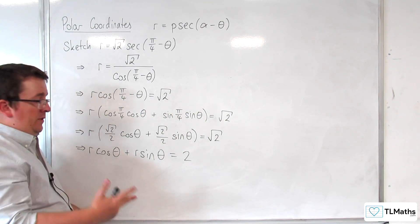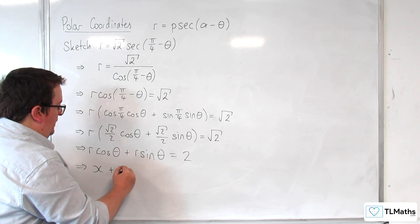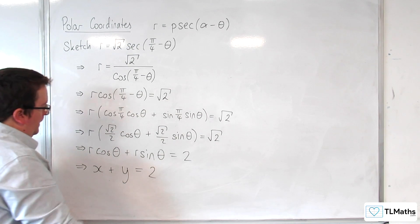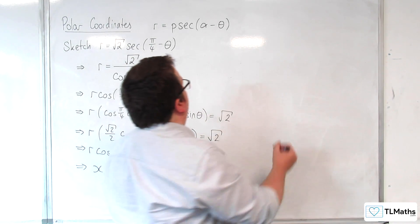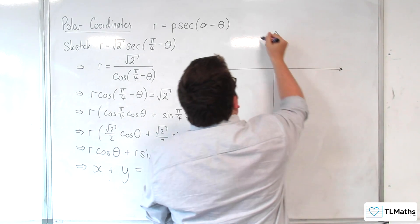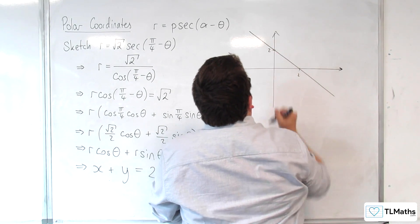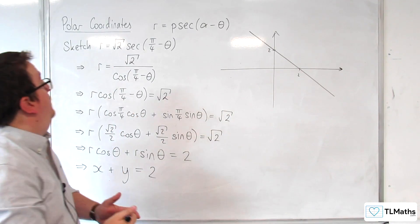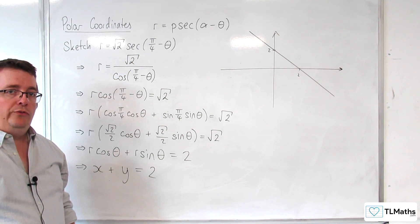Now r cosine theta is, of course, x, and r sine theta is y. So actually we get the line x plus y equals 2. Okay, and so this actually described the straight line x plus y equals 2.